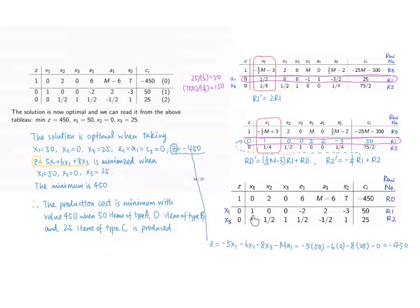If we take x1 to be 50, x2 to be 0, x3 to be 25, e1, a1, and s2 to be 0, and z to be negative 450, this solution is optimal.